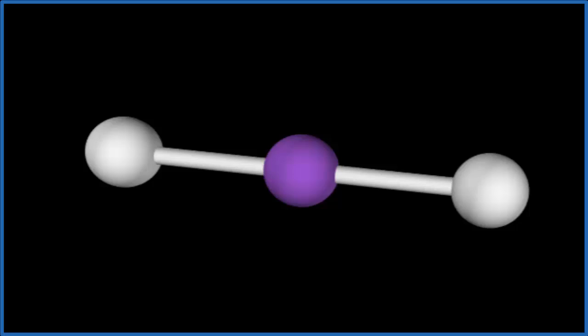Beryllium is kind of strange. It only has two bonds here, and it doesn't have any lone pairs. So because it doesn't have these lone pairs, the molecular geometry is the same as the electron geometry, linear.